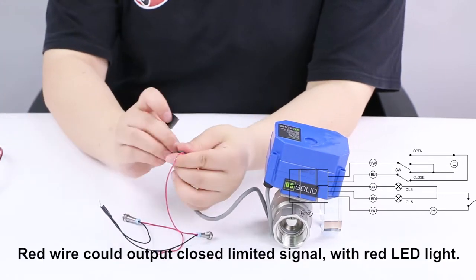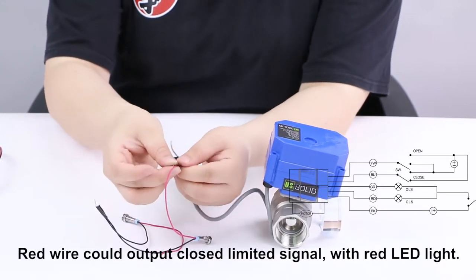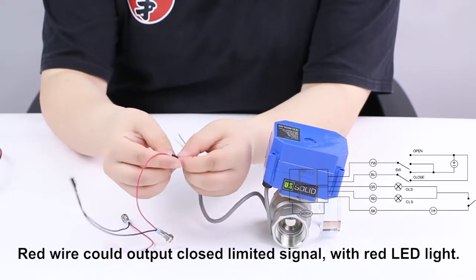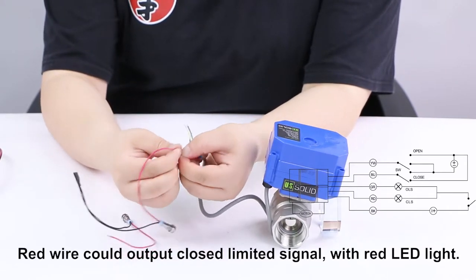We will use the red light to indicate the closed limited signal and the green light to indicate the open limited signal.